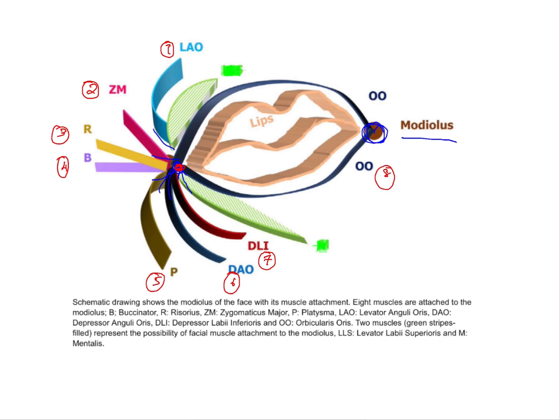The fibers of all these muscles intersect at the modiolus at one particular junction. The modiolus helps in providing facial expressions and the movement of the mouth — such as smiling, grinning, and smoking. These functional movements and facial expressions occur due to the intercoordination of these muscles at the modiolus.